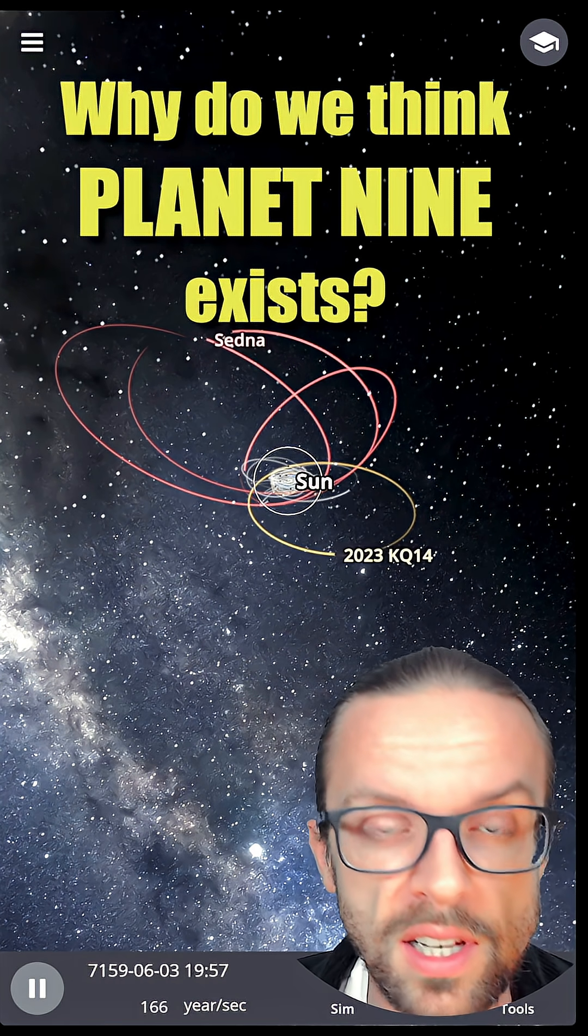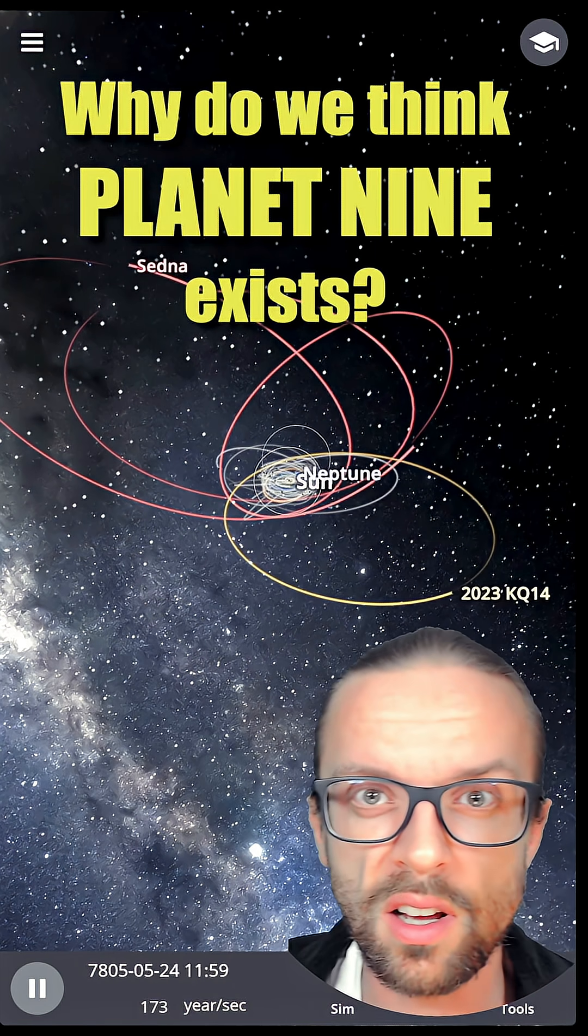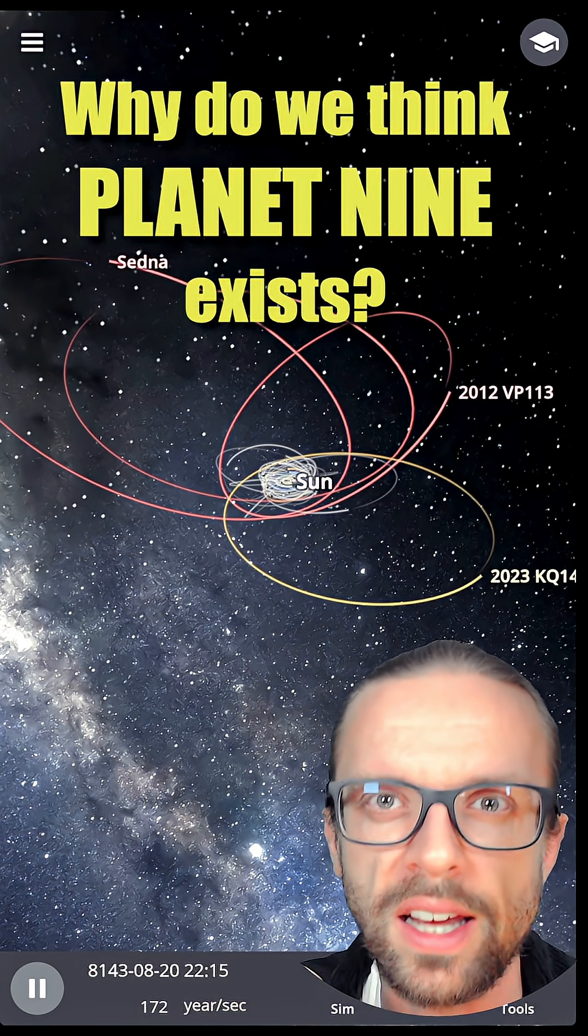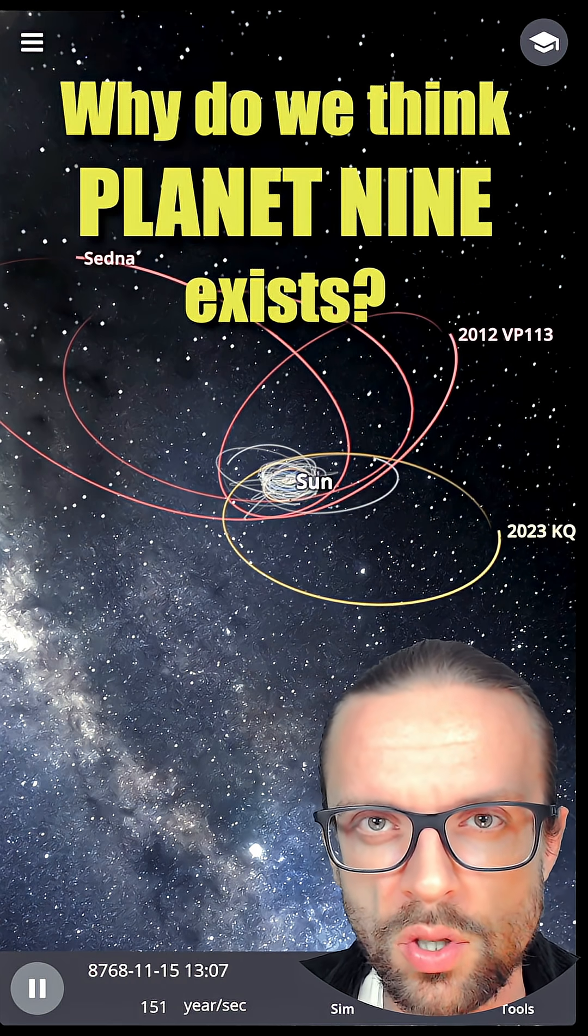Now you see the sun is in the very center, we have all the objects revolving around the sun, and these objects here in red indicate indirectly the existence of a Planet Nine in the outer solar system.